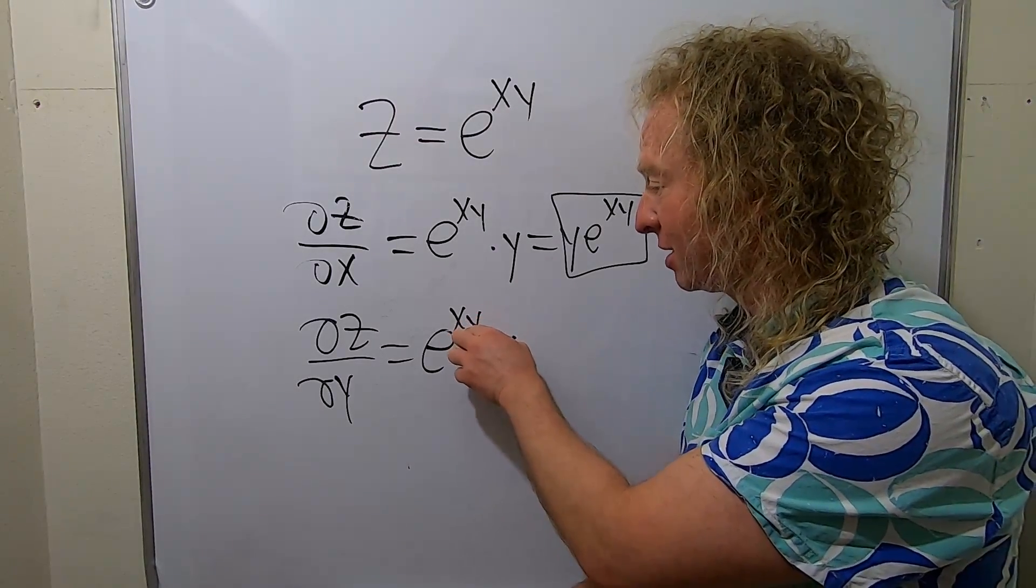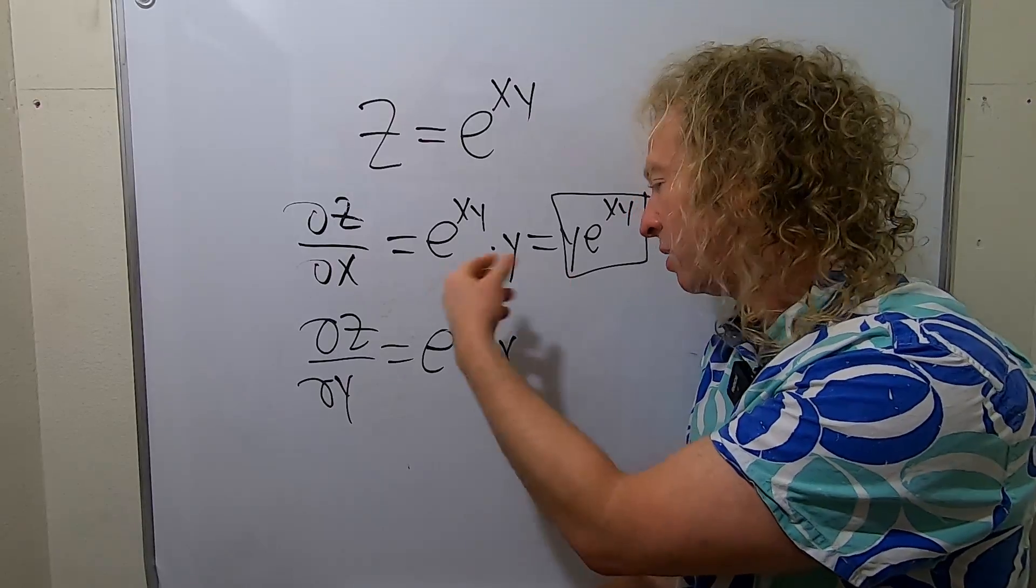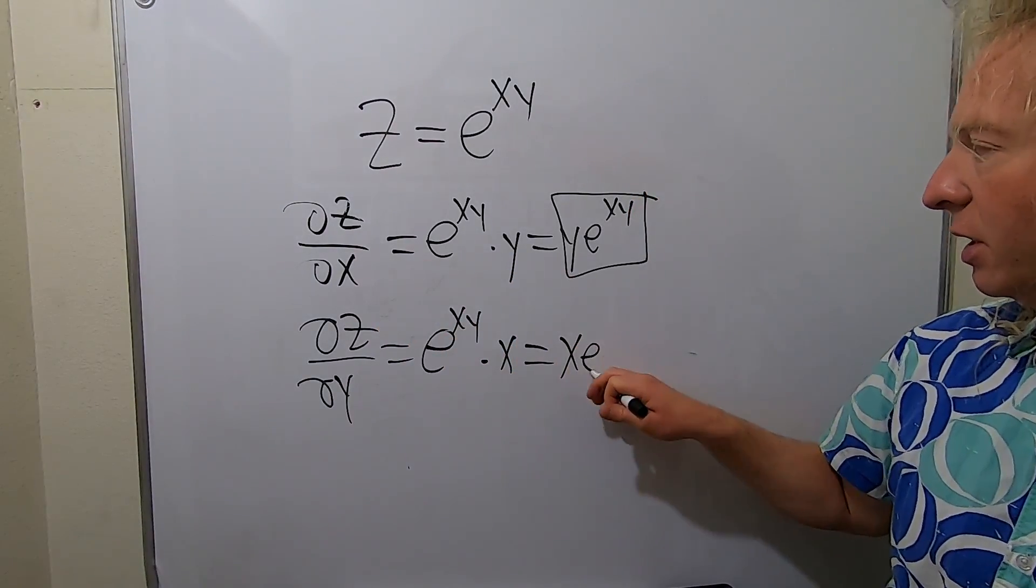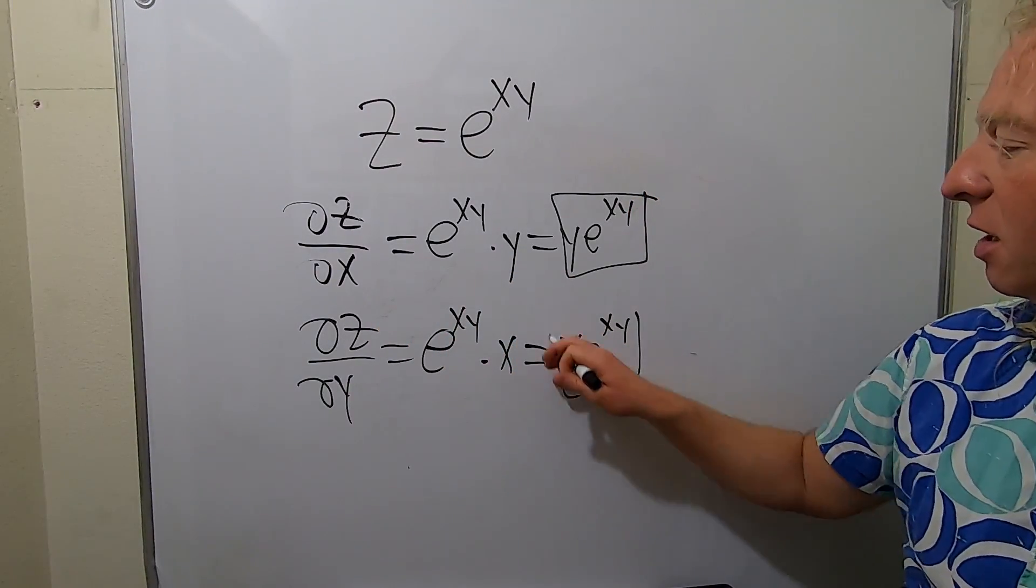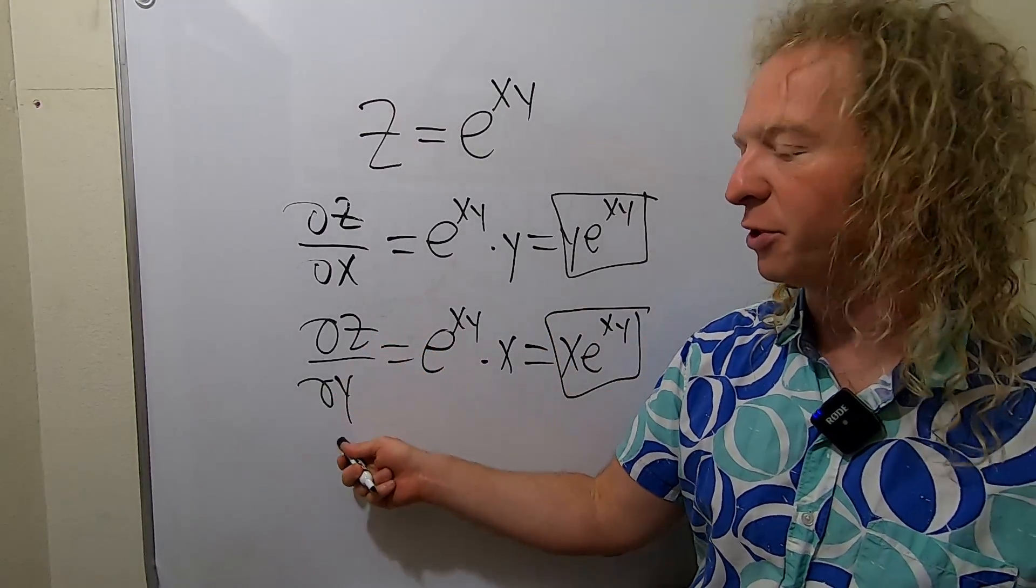Again, x is a constant, so the derivative of y is 1. So this is equal to xe^(xy), and that would be the partial derivative of z with respect to y.